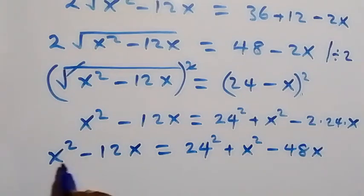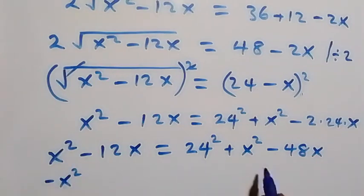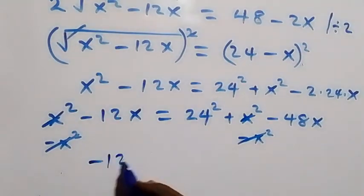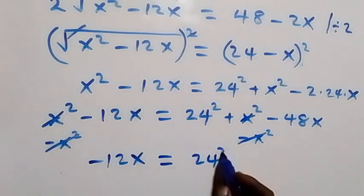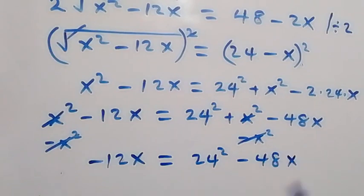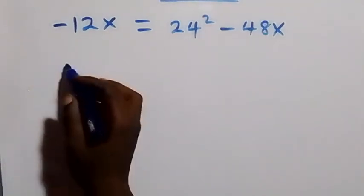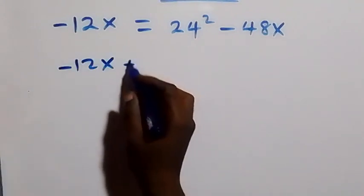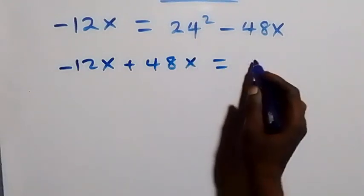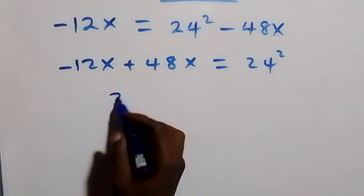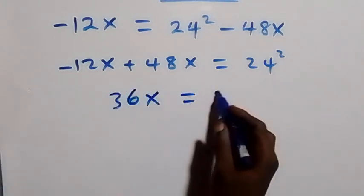We have x squared on both sides, so subtract x squared from both sides — they cancel each other. We are left with minus 12x equals 24 squared minus 48x. Collecting x terms: minus 48x moves to the left, becoming plus 48x, so 48x minus 12x equals 24 squared, which gives 36x equals 576.